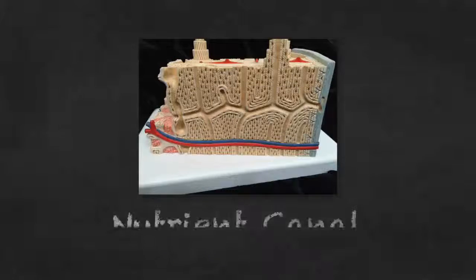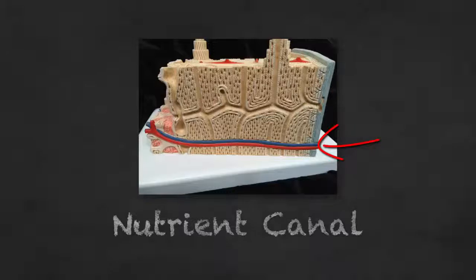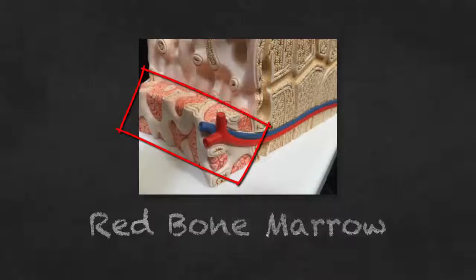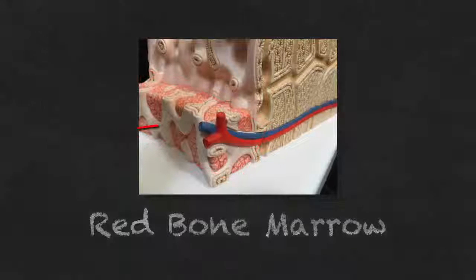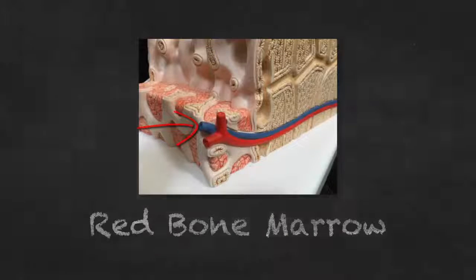The blood vessel at the bottom of the model is entering through a nutrient canal and supplies the bone with blood. Red bone marrow, found here in spongy bone, is the site of blood cell production. These blood vessels offer a route for the blood cells to general circulation.